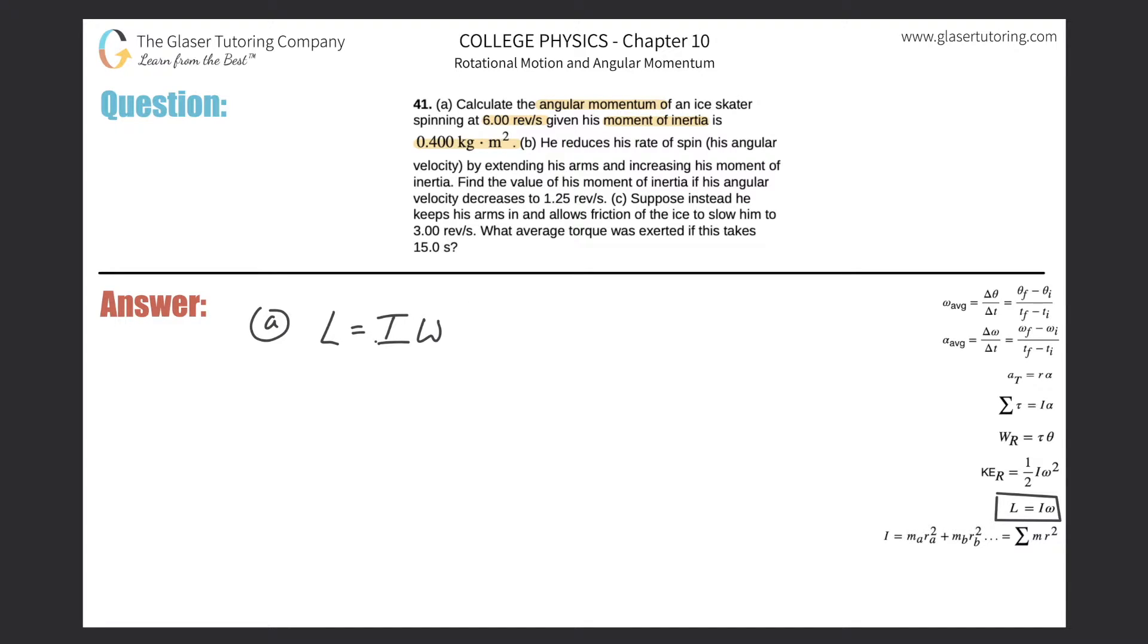So to find L, we need to know the moment of inertia, which they told us was 0.4 kilogram meter squared. And then the angular velocity, they told it to us in terms of revolutions per second. So this would be 6.00 revolutions per second. To get rid of the revolutions, I'd have to multiply this by 2π radians per one revolution so that those units would cancel.